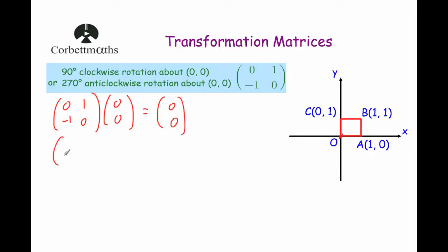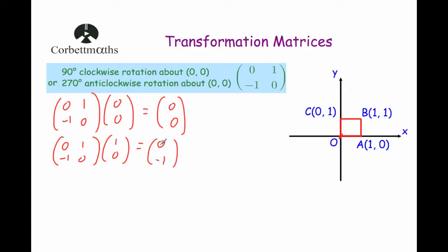Next, we're going to take the matrix 0, 1, minus 1, 0, and multiply it by the point A, which is 1, 0. Taking the first row and multiplying it by the column: 0 times 1 is 0, 1 times 0 is 0, adding them together is 0. Then multiplying the second row by the column: minus 1 times 1 is minus 1, 0 times 0 is 0, adding them together is minus 1. So the point A will move to 0, minus 1, rotating 90 degrees clockwise about the origin to the point A dash.